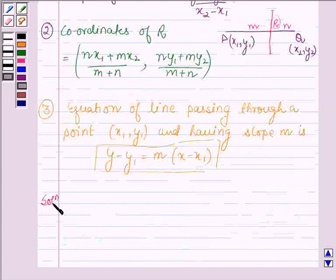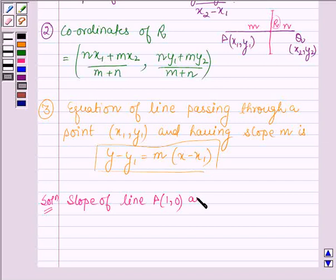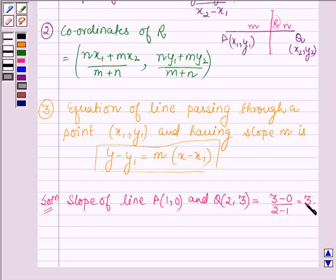First let us find the slope of line PQ, where P has coordinates (1, 0) and Q has coordinates (2, 3). By our key idea, the slope is equal to 3 minus 0 upon 2 minus 1, which is equal to 3.